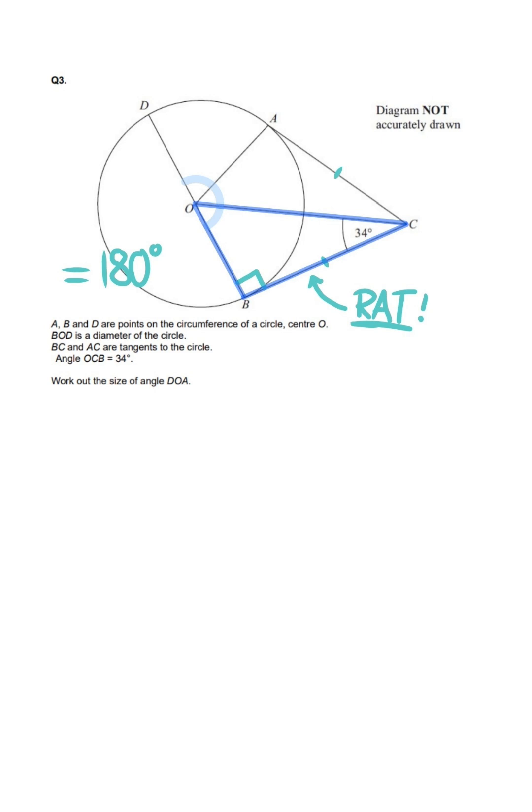Now, we know that a triangle's angles add to 180 degrees, so 180 take away 90 take away 34 is equal to 56.